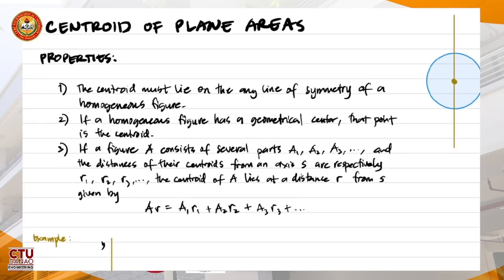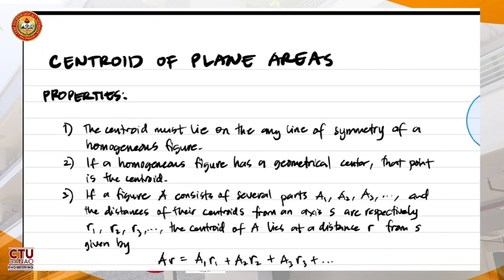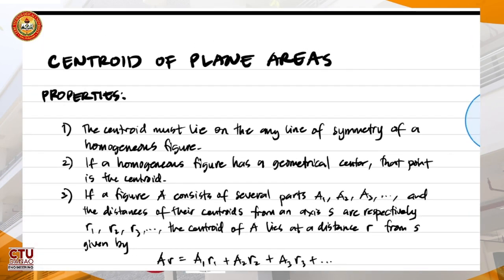For number two: if a homogeneous figure has a geometrical center, that point is the centroid. The overarching principle in this discussion is that centroids are just geometrical centers — if we are talking about plane areas, these are simply the center of an area.